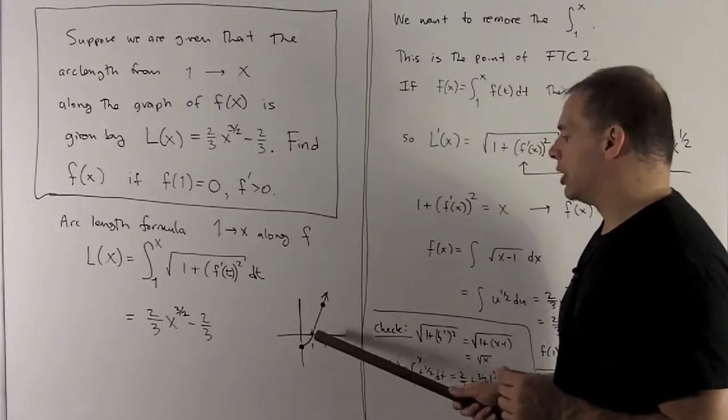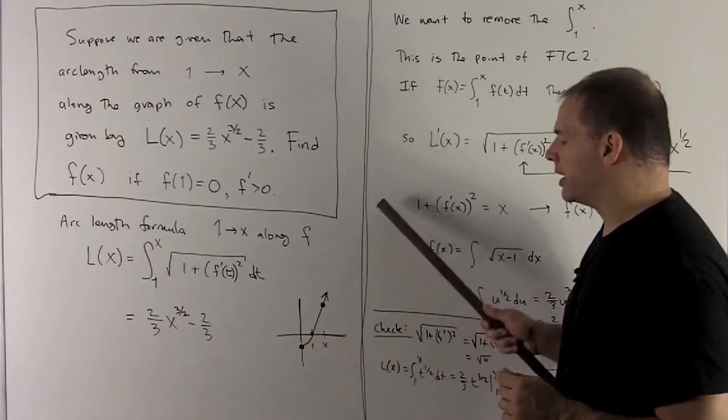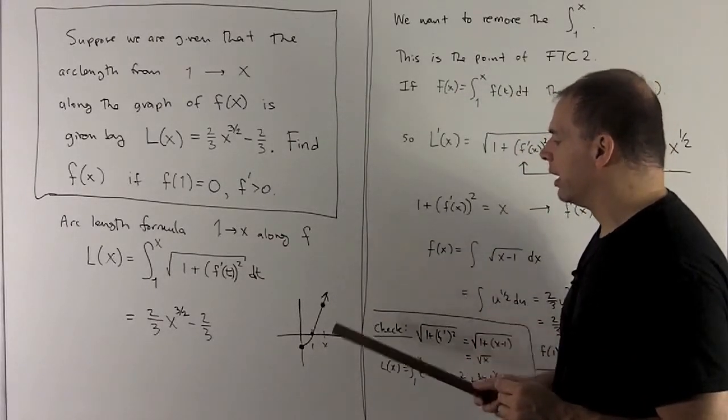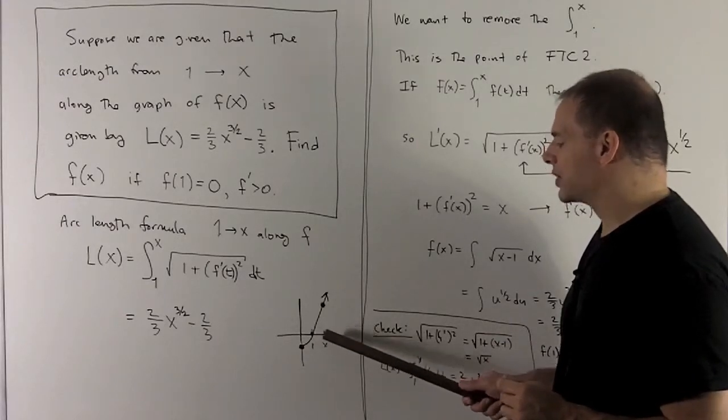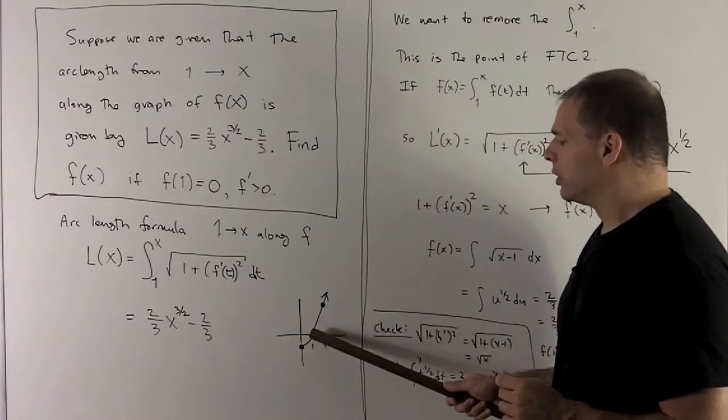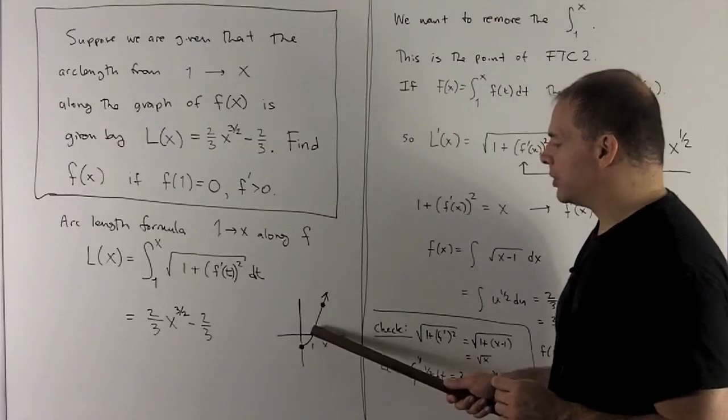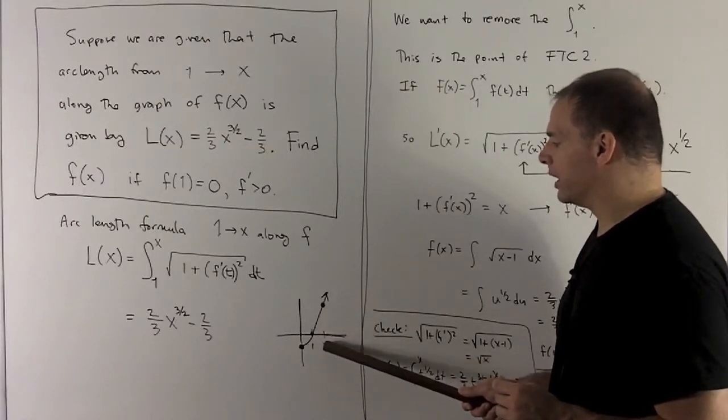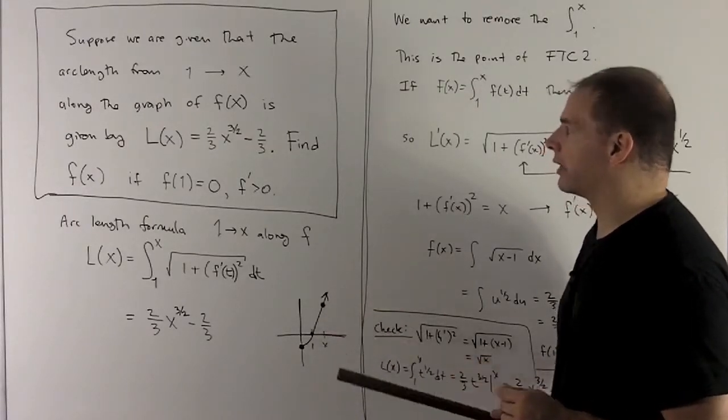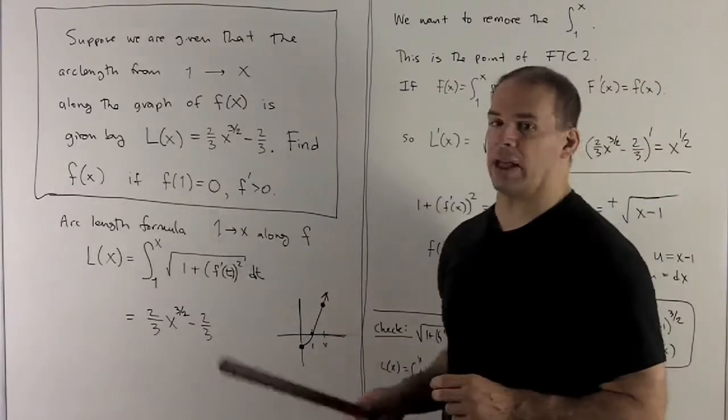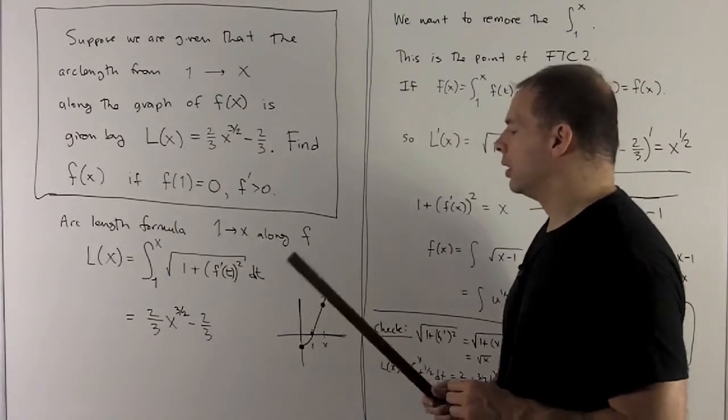Our picture for this, I just draw in the graph of f. I don't know what it is, but I just want to get an idea of what we're doing. I have 1, I have x, there's going to be a segment drawn along the graph of f, and then we just measure that length, and then for each x, we're going to get a different length, and that'll be the number that comes out of L(x).